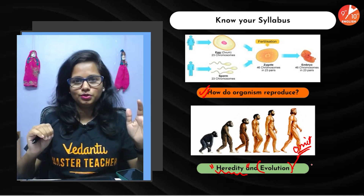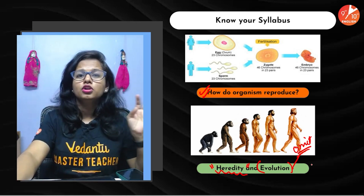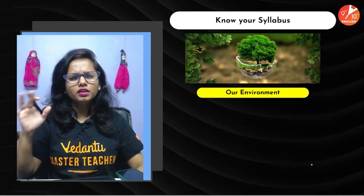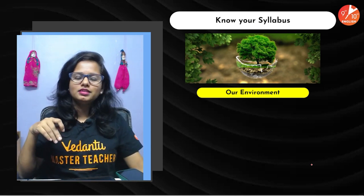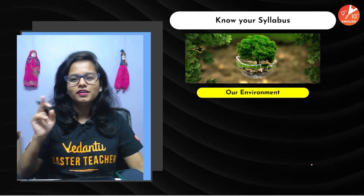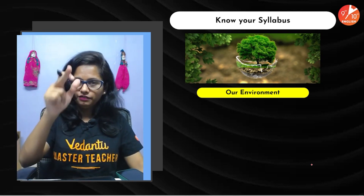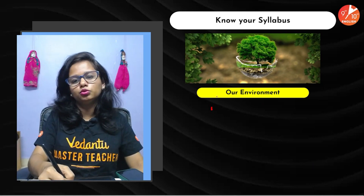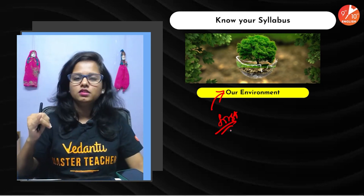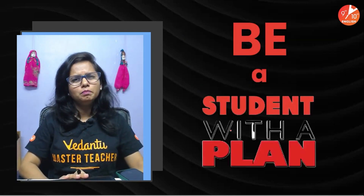There is one more chapter — very important, actually the most important of all three — which 90 percent of students tend to ignore: 'Our Environment.' In an 80-mark science paper, this chapter carries five marks weightage. It's easy, simple to learn, highly scoring, and should be on high priority. Target and attack this chapter first.